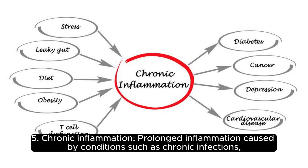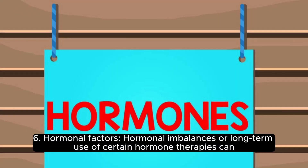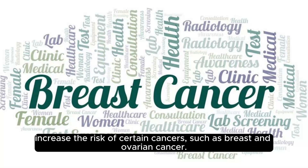5. Chronic inflammation. Prolonged inflammation caused by conditions such as chronic infections, certain autoimmune diseases, or long-term exposure to irritants can increase the risk of cancer development. 6. Hormonal factors. Hormonal imbalances or long-term use of certain hormone therapies can increase the risk of certain cancers, such as breast and ovarian cancer.